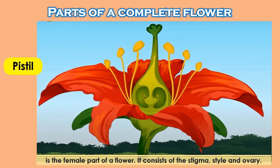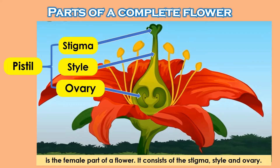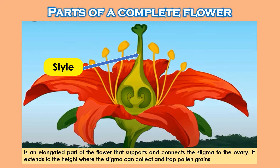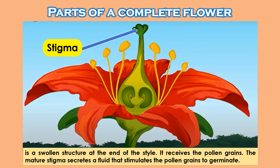Pistil: It is the female part of a flower. It consists of the stigma, style, and ovary. The style is an elongated part of the flower that supports and connects the stigma to the ovary. It extends to the height where the stigma can collect and drop pollen grains. The stigma is a swollen structure at the end of the style — it receives the pollen grains. The mature stigma secretes a fluid that stimulates the pollen grains to germinate.